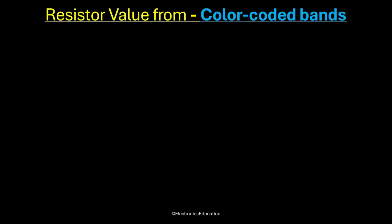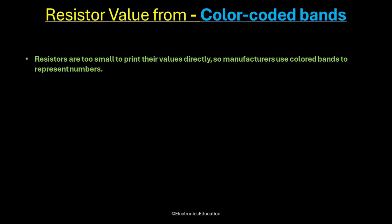Now why there was a need for these codes? Why can't they directly print the values on the resistor body itself? Resistors are too small to print their values directly, so manufacturers use colored bands to represent numbers. By learning this code, we can quickly identify any resistor value.